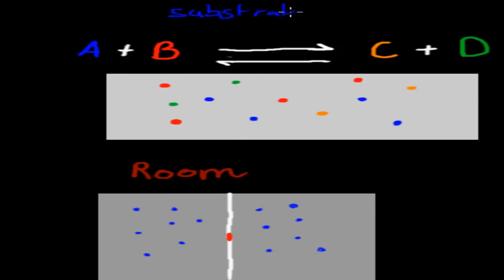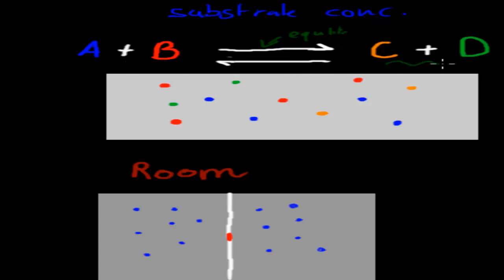So this is about substrate concentration. What you have here is your equilibrium — remember these two arrows mean the equilibrium. We're going to have A and B reacting to produce C and D. This is our reaction. At the moment we have four A's, four B's, two C's, and two D's.